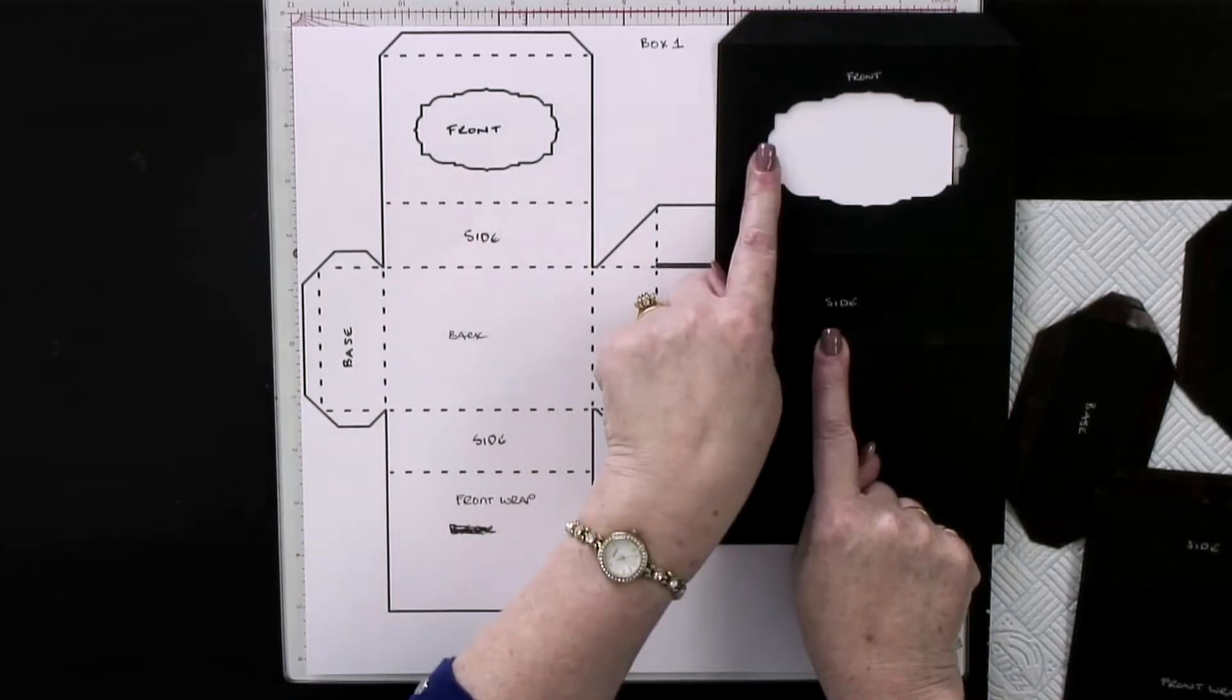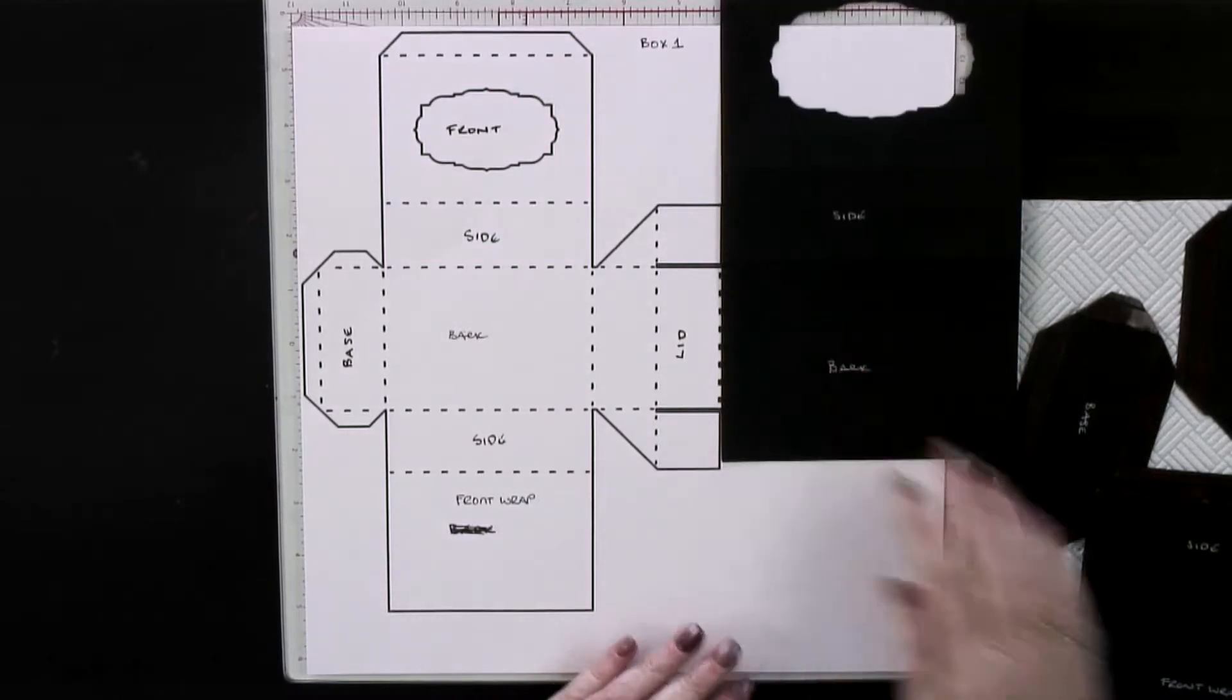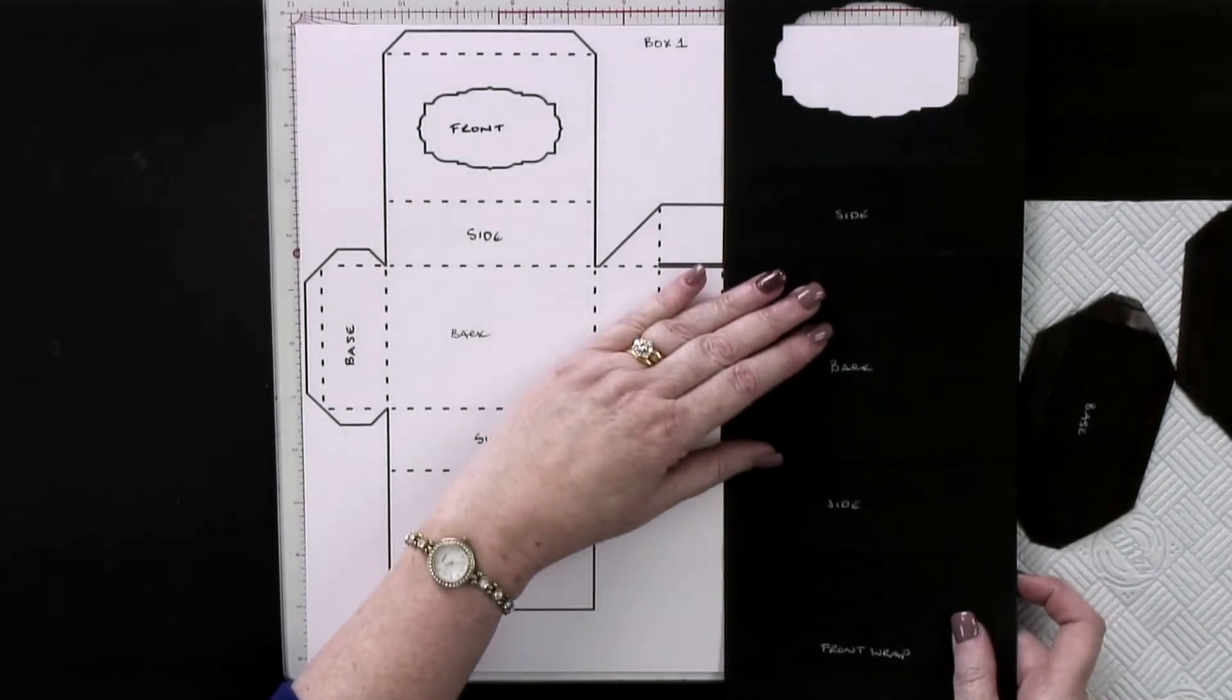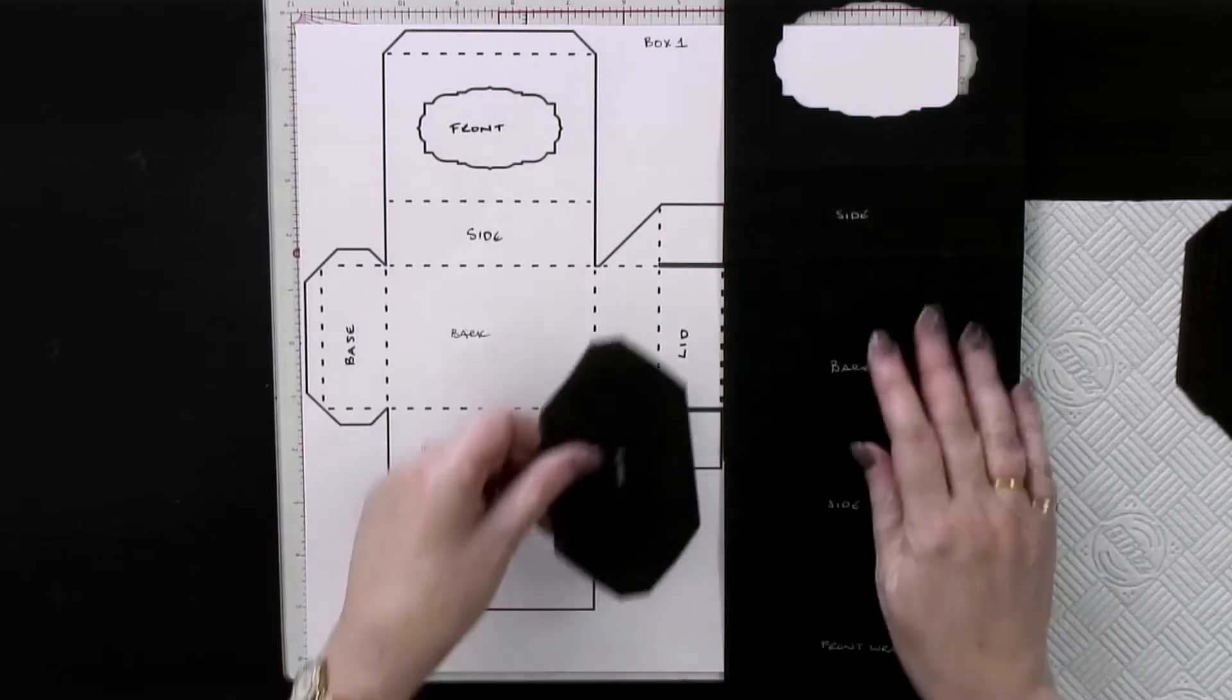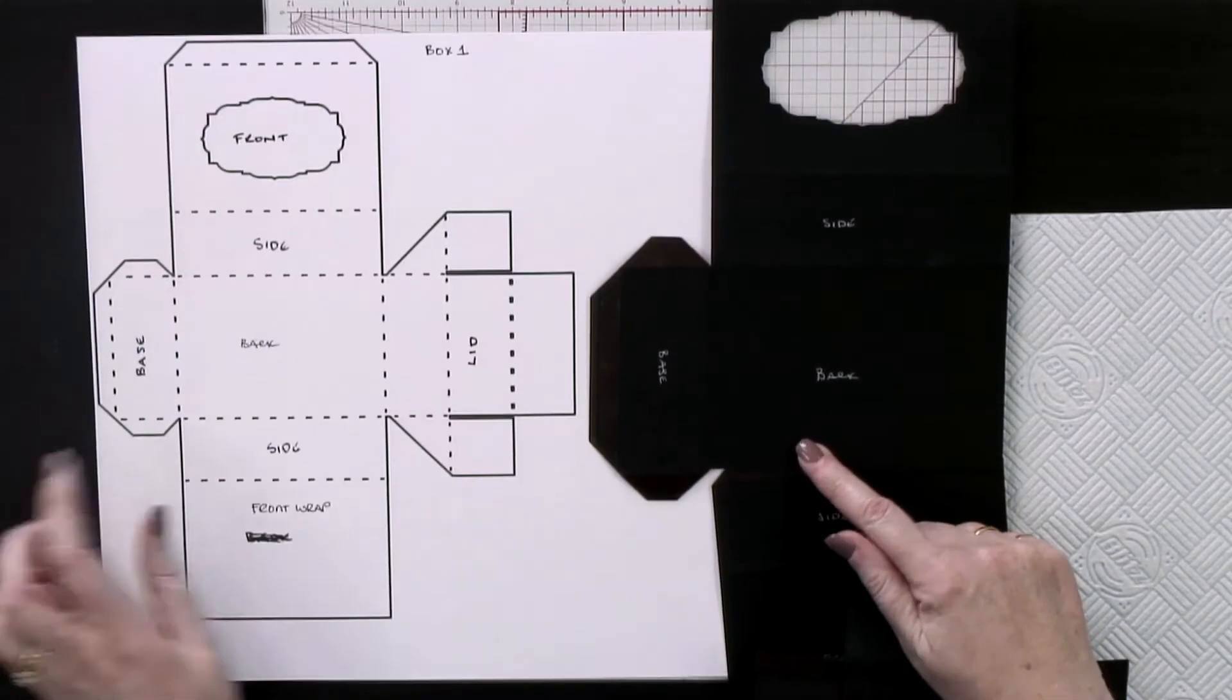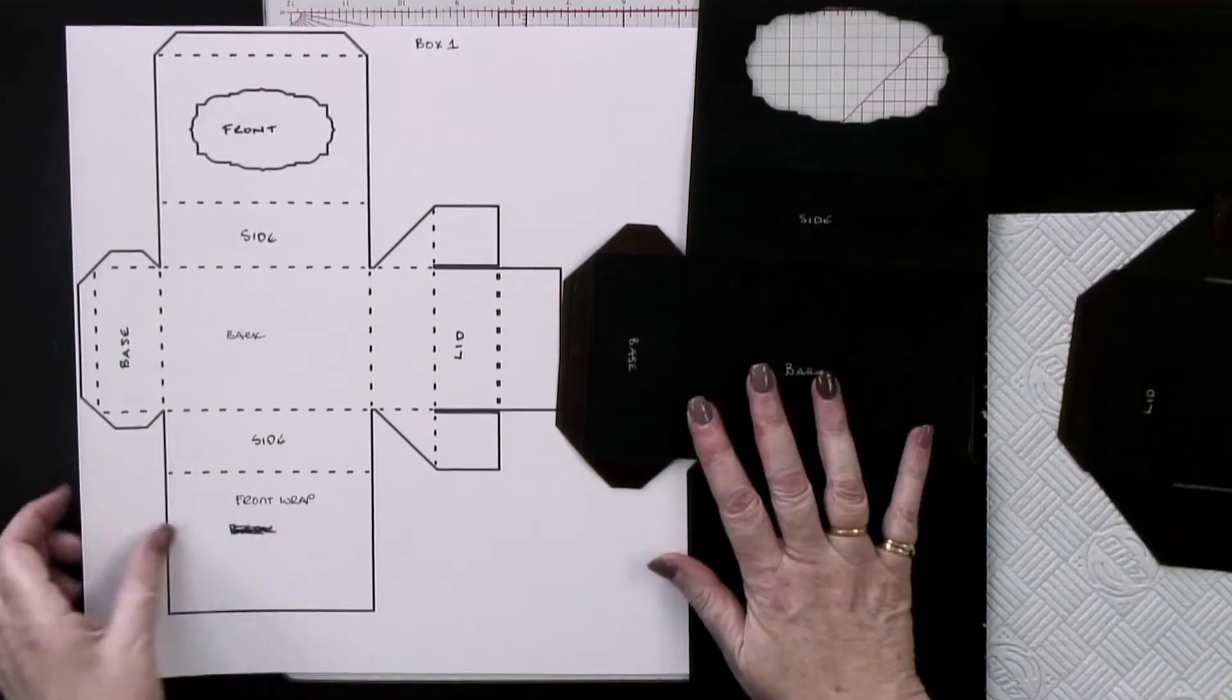This is the front, this is the side, this is the back. So I now know that the other side and the front wrap needs to go and get glued underneath there. Then the base, which is this bit here, needs to go underneath there.